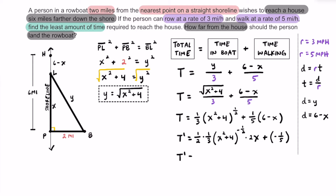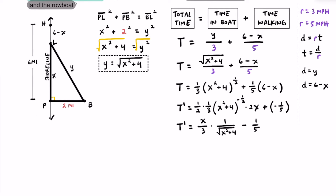Cleaning this up, T prime is going to be equal to: multiplying one half by one third and two X — the two's cross cancel — we get X on top and three on bottom, multiplied by one over the square root of X squared plus four, minus one fifth. So T prime equals X over three times the square root of X squared plus four, minus one fifth.